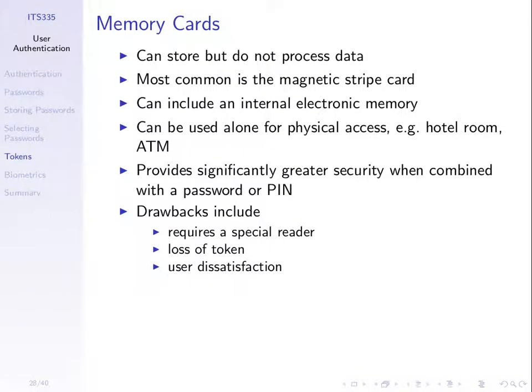Some of the issues that come up: memory cards, as we've seen with banks — a bank card, credit card, ATM card — they often store data. The older versions would just store data; they don't have a processor inside and can't do any calculations. There were ones with just a magnetic stripe, but most today have some electronic memory inside. They are usually combined with a password or a PIN, so we have two forms of authentication: you need to be in possession of that card as well as know the PIN to be authenticated.